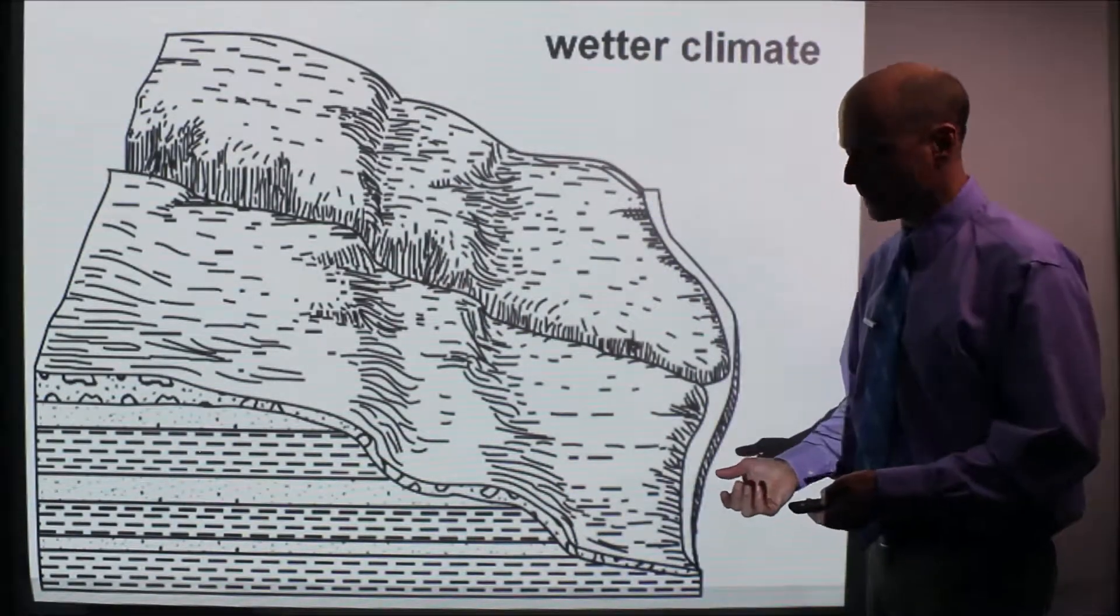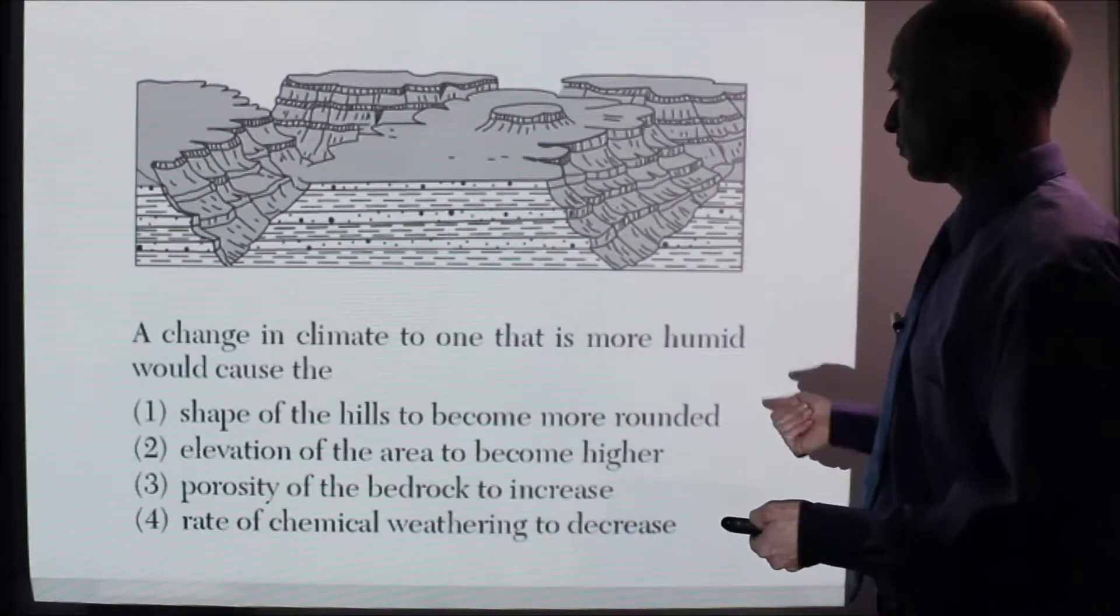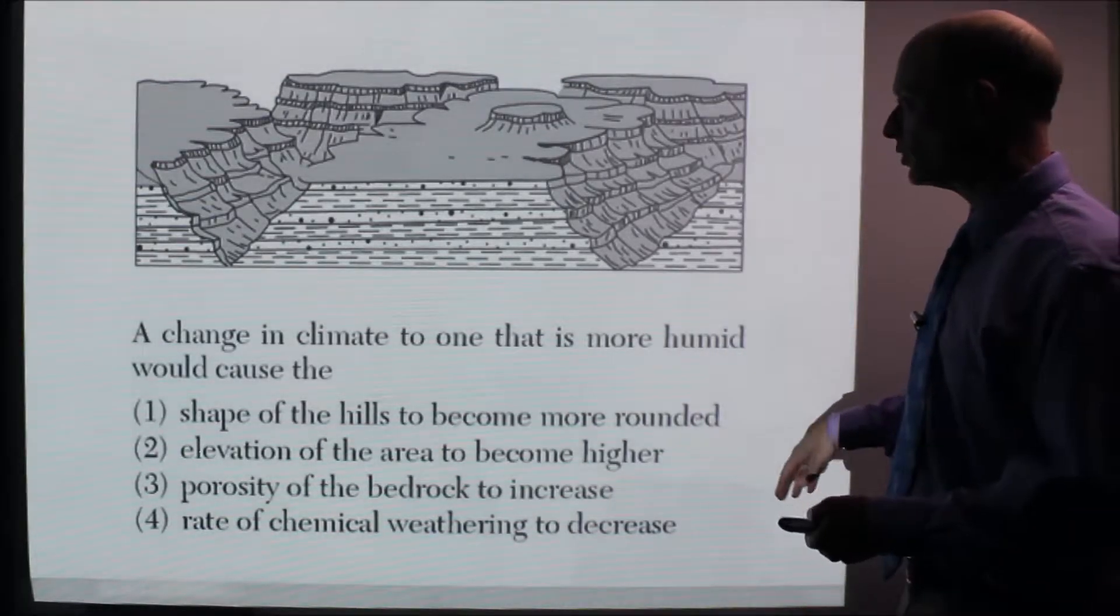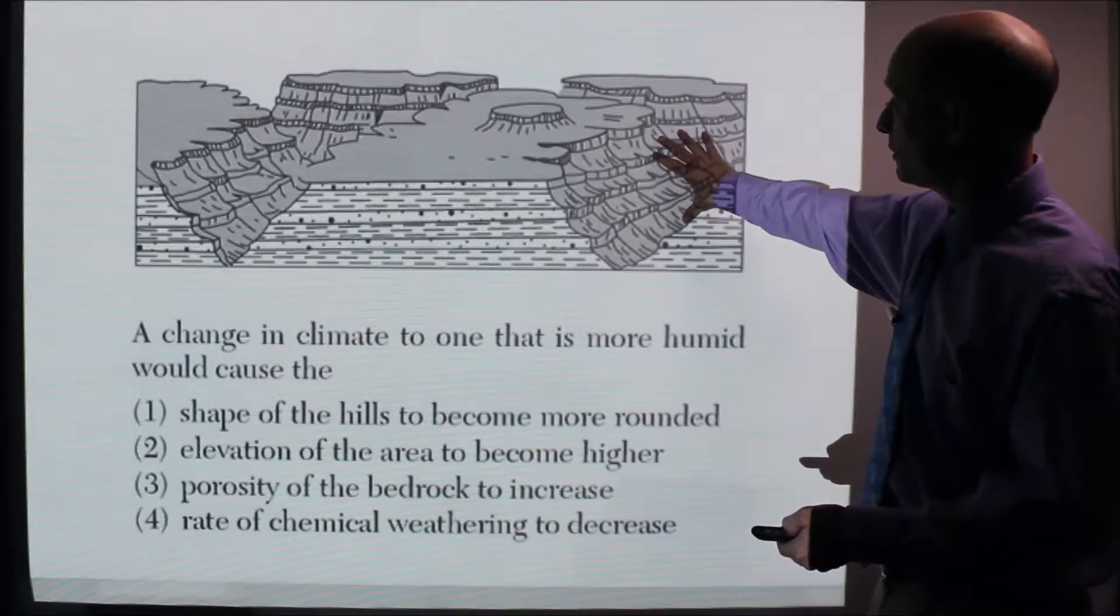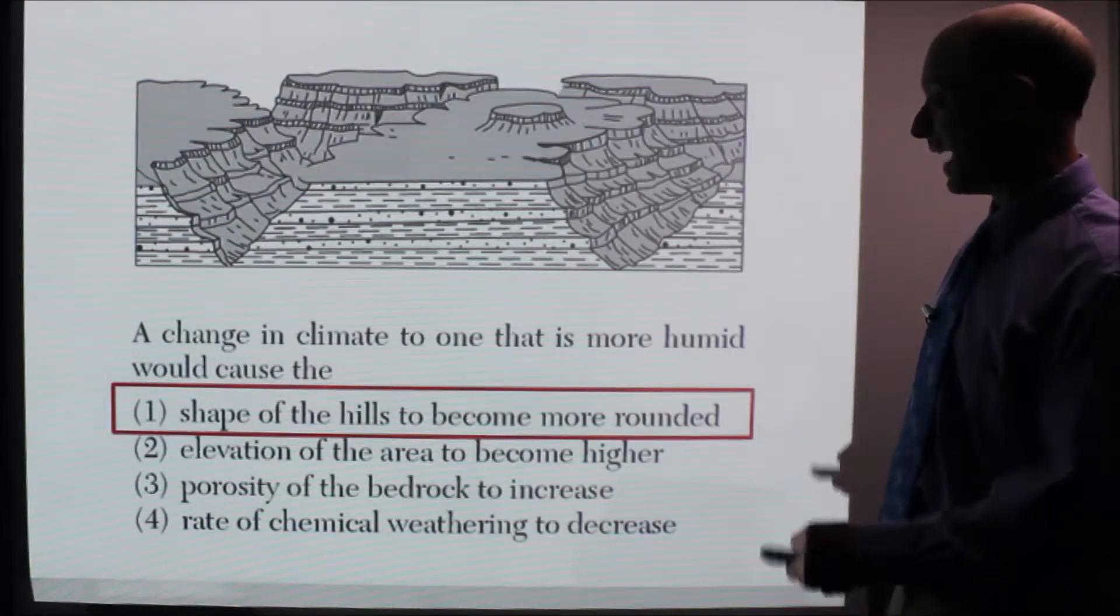But if it's more of a moist climate or wetter climate, all that rain and the vegetation will cause it to be a little more rounded. Another part to landscape state you kind of need to know. Here's a question like this. A change in climate to one that is more humid would cause - so in this case, look what we see here. If it became more humid, what would happen? The shape of the hills would become more rounded.